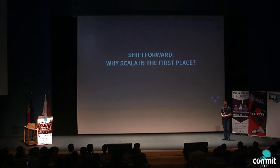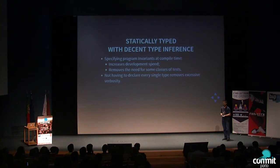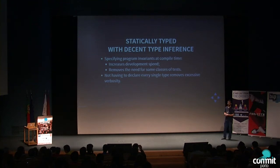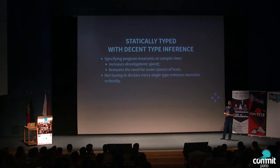When I joined Shift Forward, we were already using Scala, so I didn't take part in the decision to start using it. But why did Shift Forward choose Scala in the first place? First of all, we were looking for a statically typed language. We are strong believers that specifying some programming constraints at compile time increases development speed in the long term. It leads to less bugs, and it removes the need for some classes of tests.